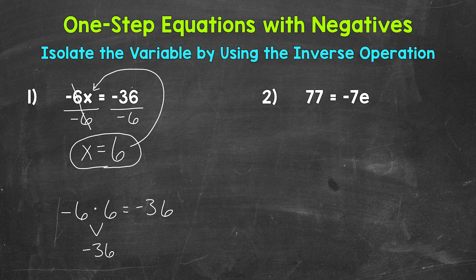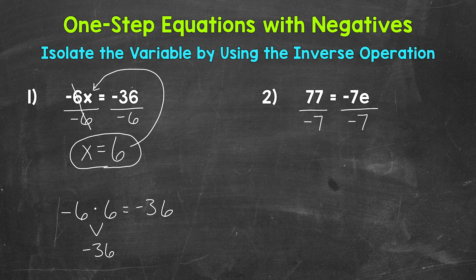Let's move on to number 2, where we have 77 equals negative 7e. We need to isolate that variable of e. e is being multiplied by negative 7, so we need to undo that multiplication by using the inverse operation. The inverse of multiplication is division, so let's divide the right side by negative 7. Whatever we do to one side of the equation, we must do to the other, so let's divide the left side by negative 7 as well. The negative 7s cancel out, giving us 1e, which is just e. Our variable is now isolated.